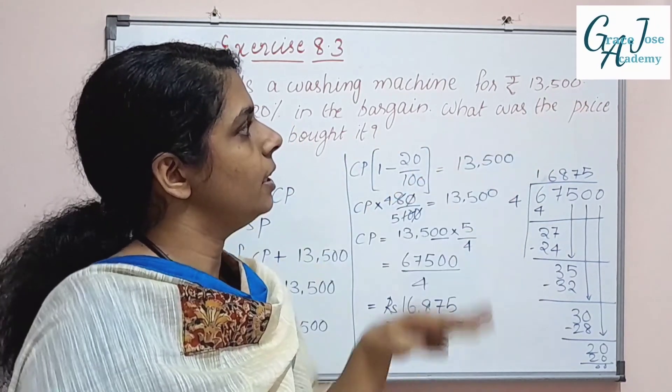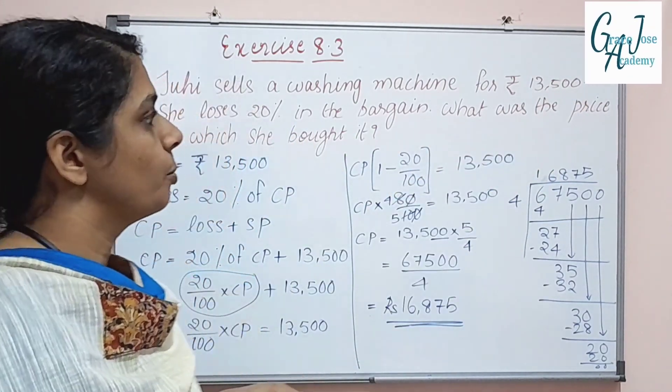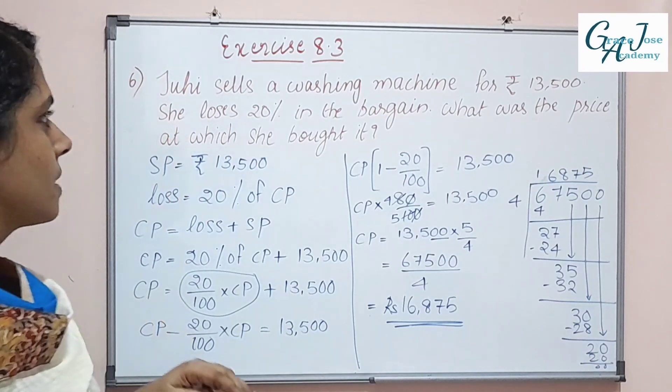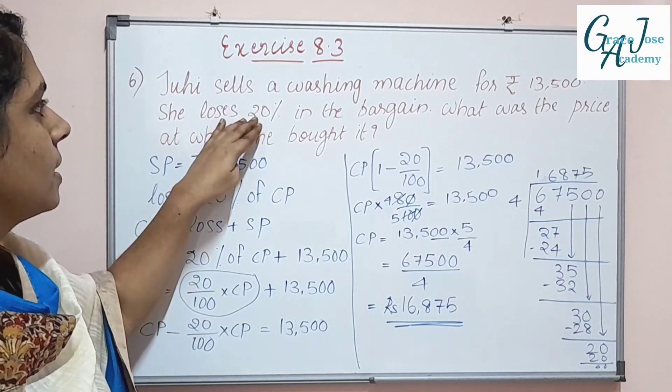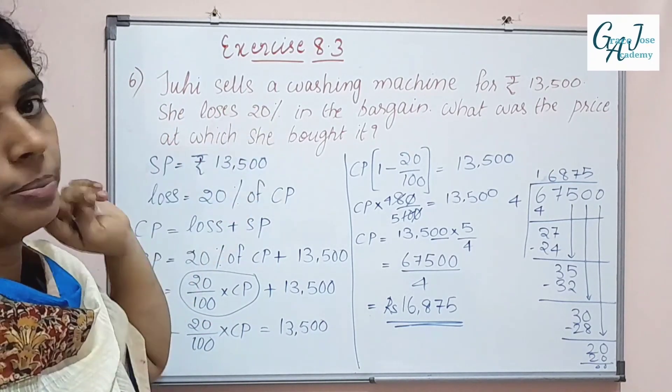The cost price of the washing machine is Rs. 16,875. The selling price was Rs. 13,500, and the loss is 20%.